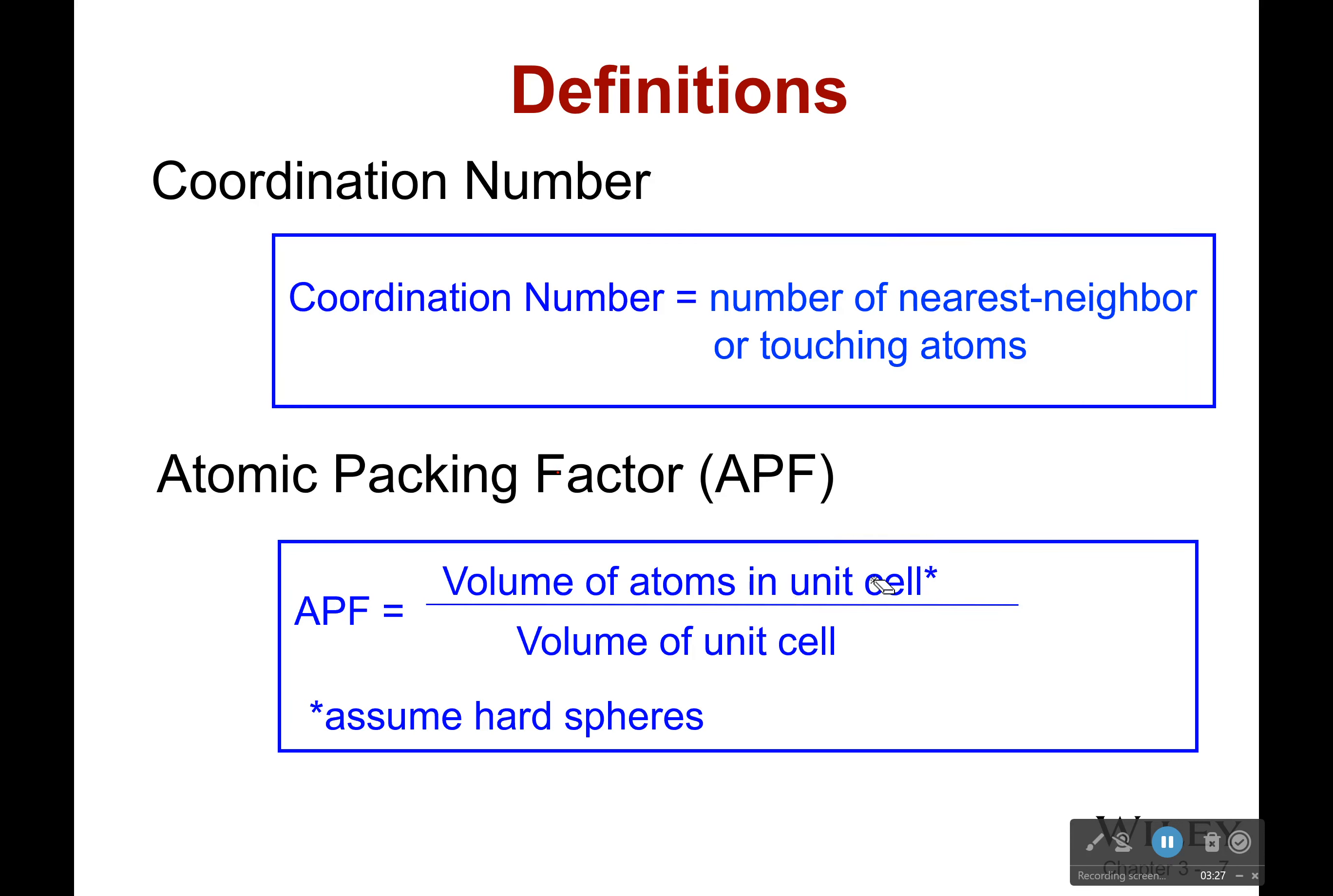If you look at it for this atom in the middle, it's connected to one, two, three, four, five, six. That's its coordination number. That's how many atoms it is close to. The higher your coordination number, the higher your packing density.